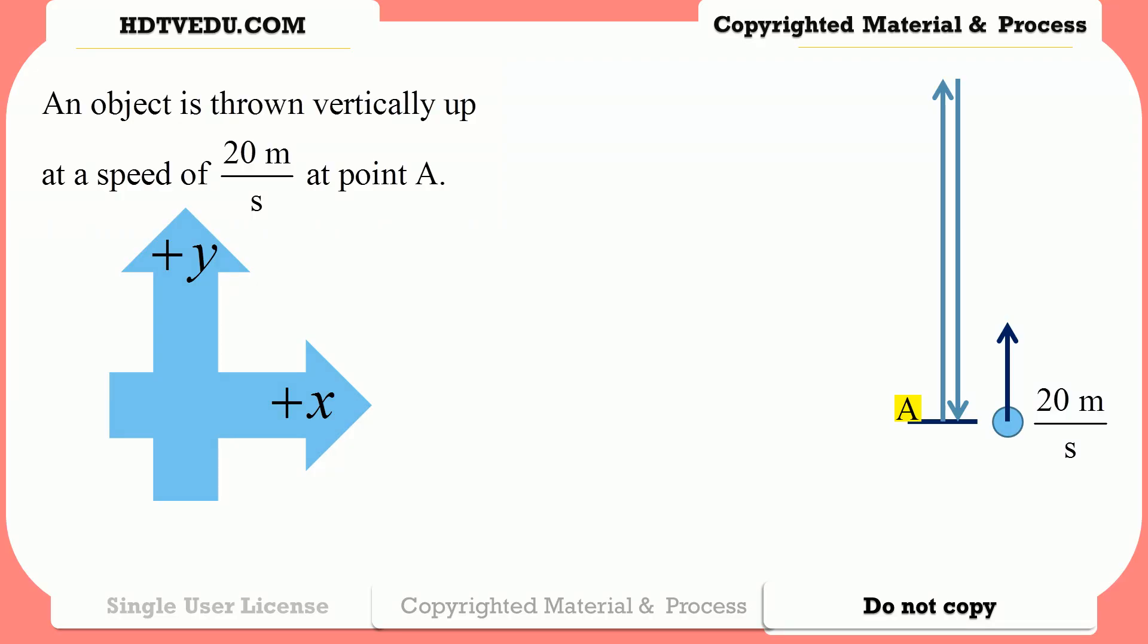All right, in this particular set, 2.06, an object is thrown vertically up at a speed of 20 meters per second at point A.